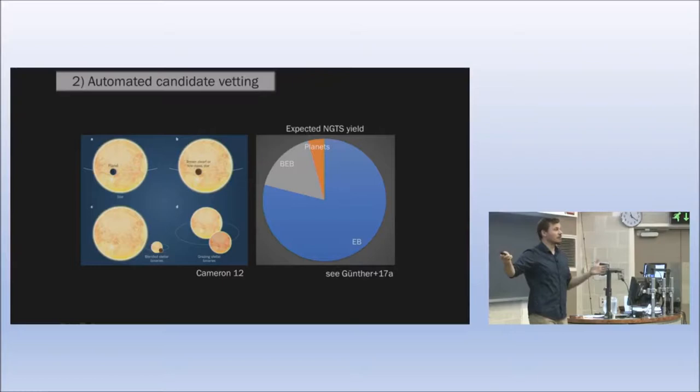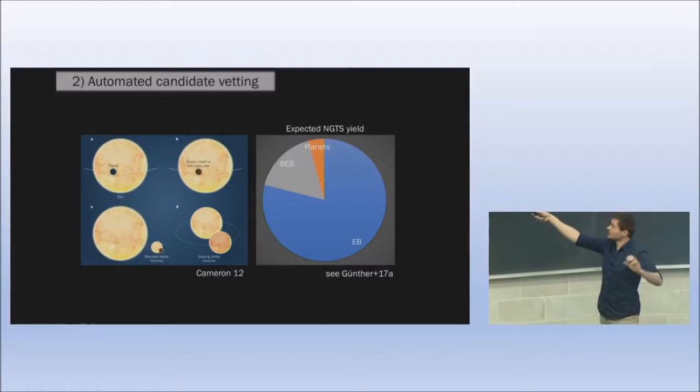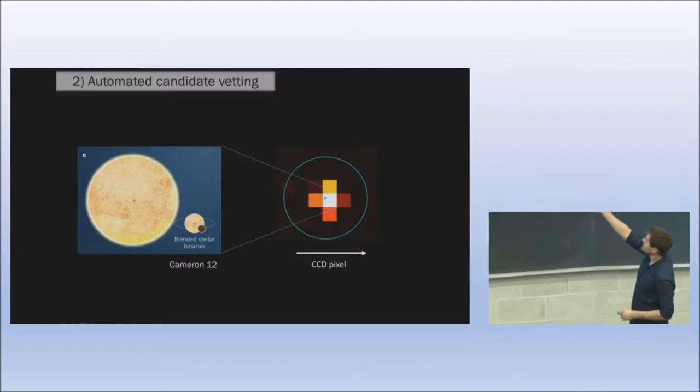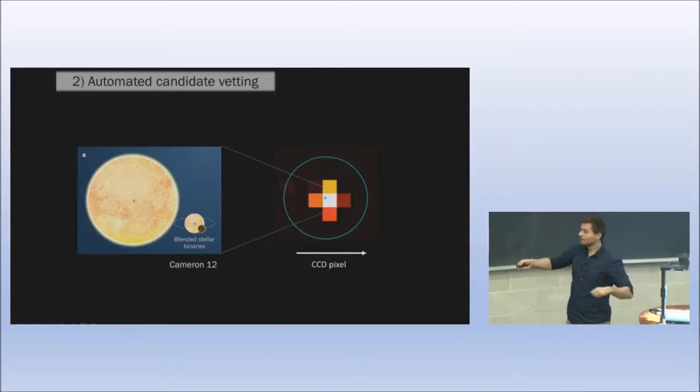The next few slides focus on these blended stellar binaries, BEBs, background eclipsing binaries. That means we look at a target star and the target star is really boring, it's a single star, there's nothing happening. But somewhere along our line of sight, far in the background, there's actually two stars that eclipse each other. There's no planet involved. But the light from this object may fall within the same CCD pixel as the light from the bright target star. This is a real image of a star on our CCD pixel.